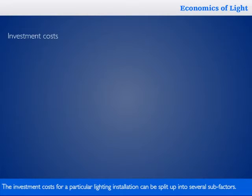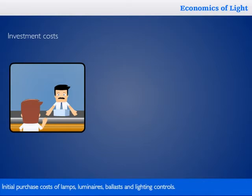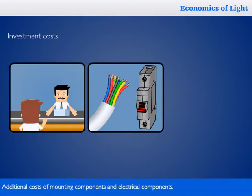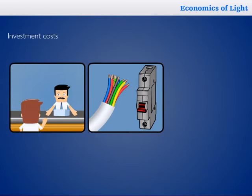The investment costs for a particular lighting installation can be split up into several sub-factors: initial purchase costs of lamps, luminaires, ballasts, and lighting controls; additional costs of mounting components and electrical components; and installation costs.